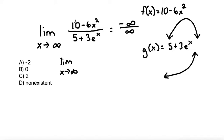The derivative of the top, the 10 will go to 0, and then this term will be negative 12x using the power rule, over, again the 5 is a constant so it's going to go to 0. And the e to the x is going to stay the same. The coefficient will just drop down, so that will make 3 e to the x.